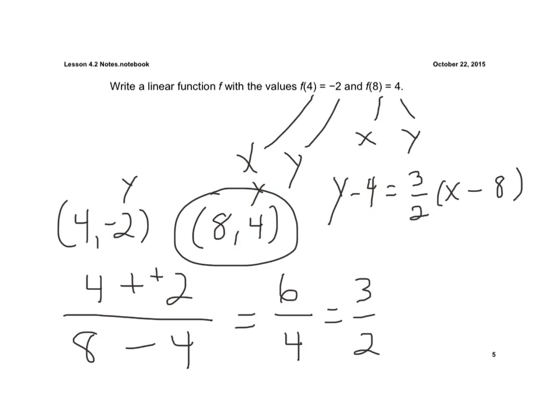Now again, I need to put this into slope-intercept form. So we're going to go ahead and solve this. I'm going to distribute through first. So I have y minus 4 is equal to 3 halves times x minus. And I have to take 3 halves times 8 over 1. So I cross-cancel. And I get 3 times 4 is 12, so that's minus 12.